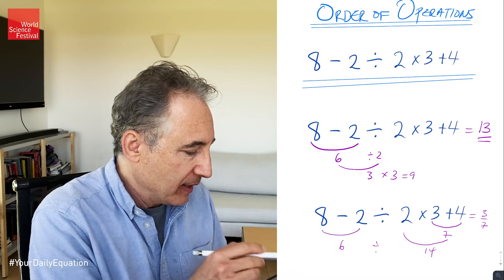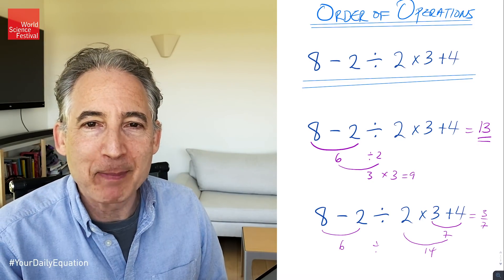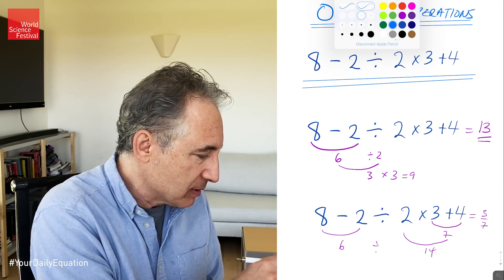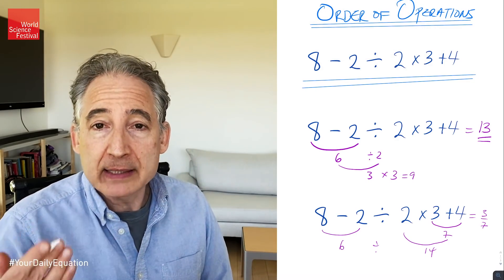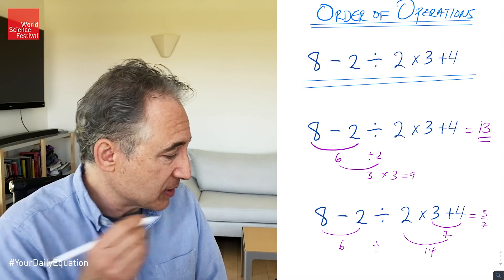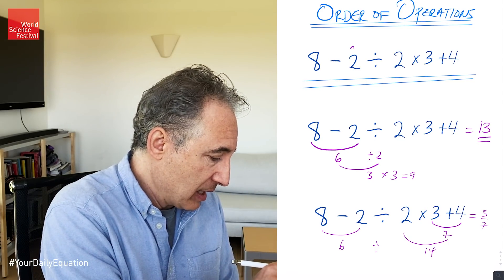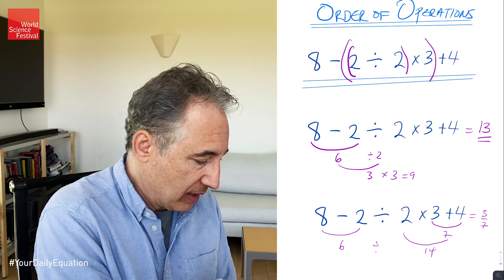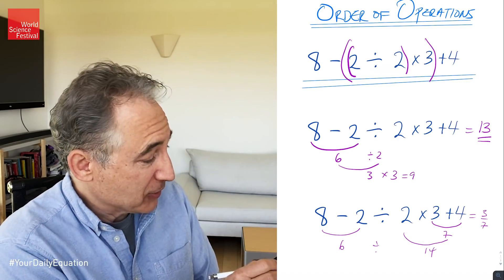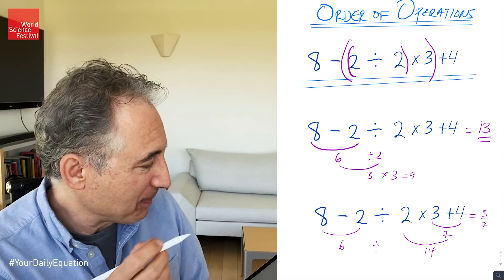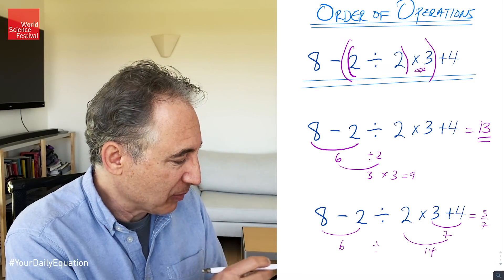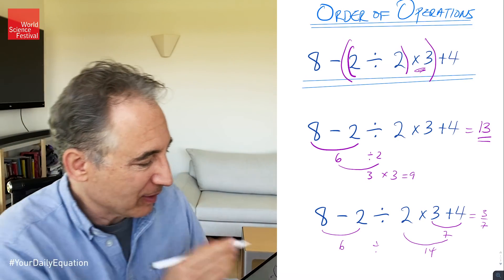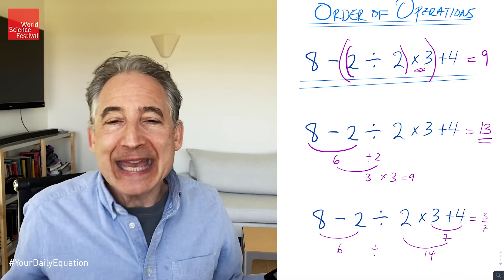We use parentheses to indicate precisely the order of operations that we have in mind. So in fact, if the interpretation of this mathematical sentence was meant to be the one that comes out of PEMDAS, I would want my student, and what we professionals always do, to write down some parentheses. So I would do a parentheses like this, and then I would do another one over here, and that would tell me to do the 2 divided by 2 first to get my 1, then do my 1 times my 3 to get 3, and then do my 8 minus 3 is 5 plus 4 equals 9. That's it.